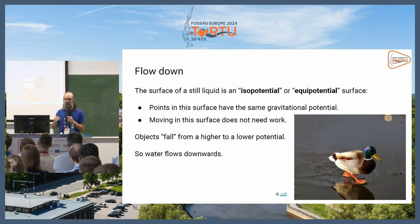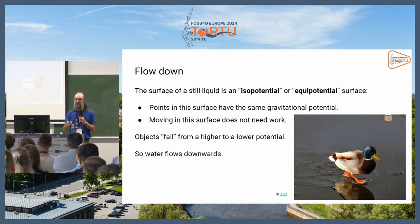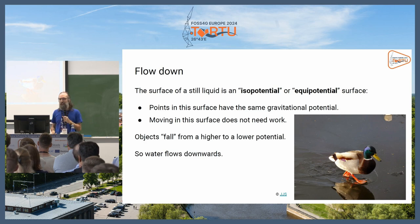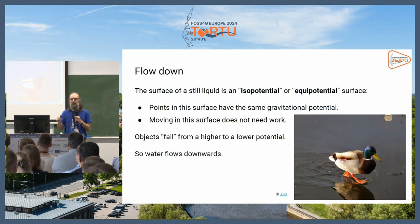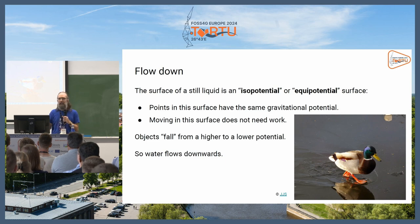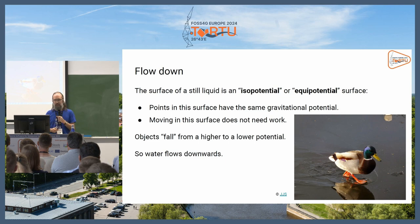Water flows downwards, and at some point it stops because it's still — which is an equilibrium — and thus it forms an isopotential or equipotential surface. Points on that surface have the same gravitational potential, so there's no work to move along it. Skating on a frozen lake is very easy because you don't have to go against gravity, only against friction.